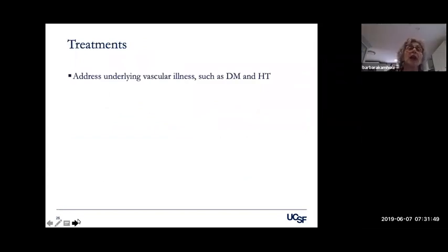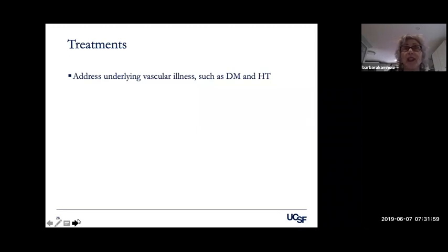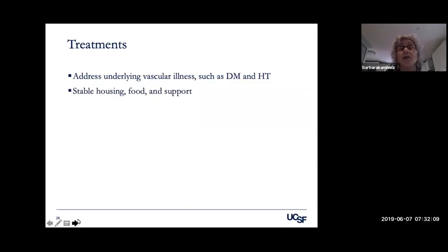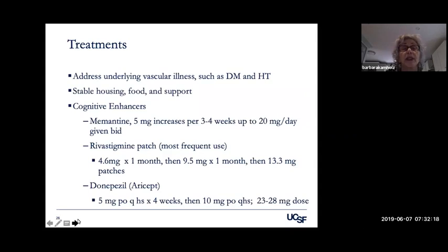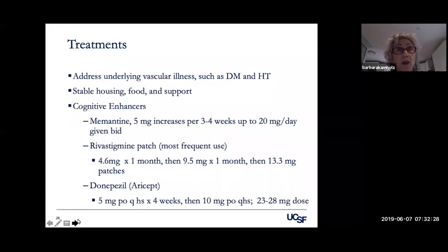Treatments are limited. Addressing the underlying vascular illness — such as diabetes and hypertension — is best done earlier in life, though there can be some mitigation if you try to address these once the disorder presents. These people need stable housing, food, and support, as they're not able to provide those for themselves due to impairments in independent activities of daily living. There are certain cognitive enhancers that can be used, although many of us have mixed feelings about them because we see very little improvement, and they are costly and difficult to get an older person to take.